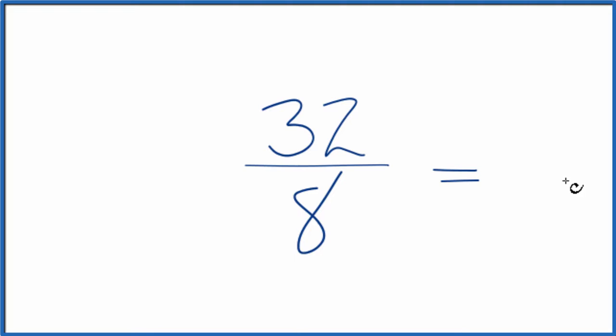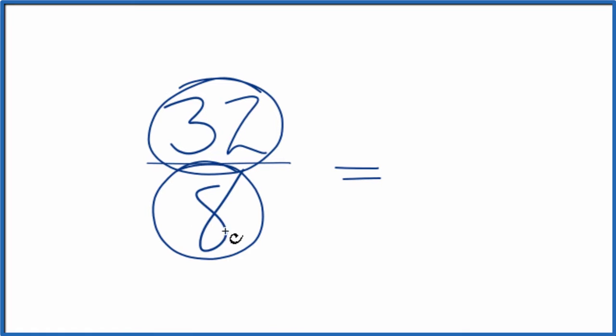To do that, we need to find a common factor, something that goes into 32 and 8 evenly. I know that 8 times 4 is 32, so I can divide 32 by 8 and then 8 by 8. Let's do that.